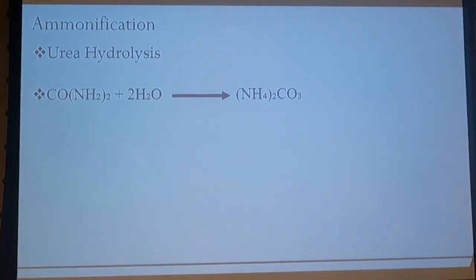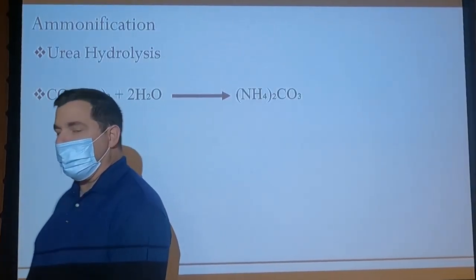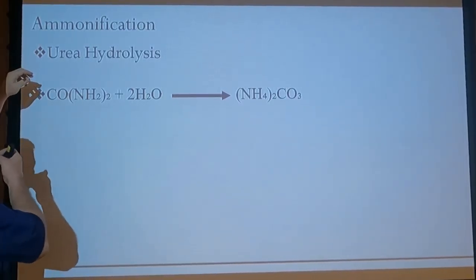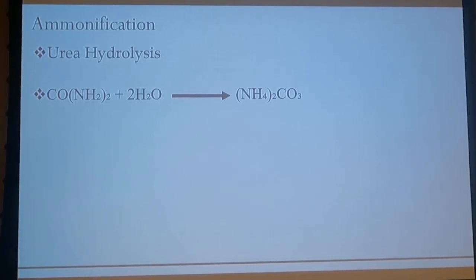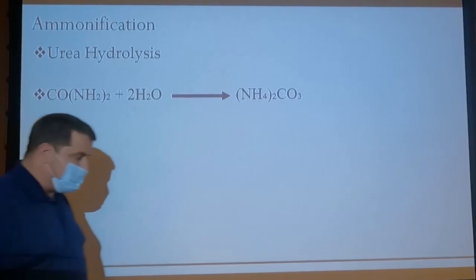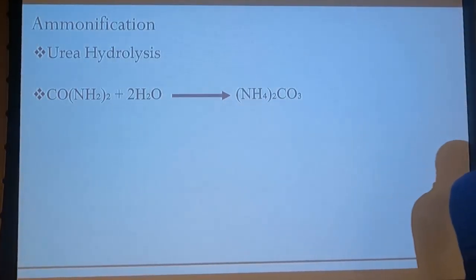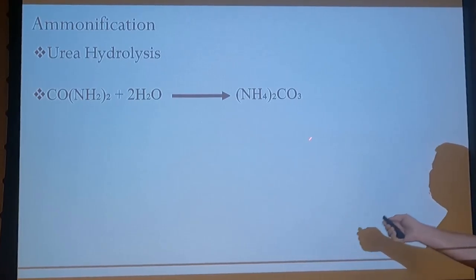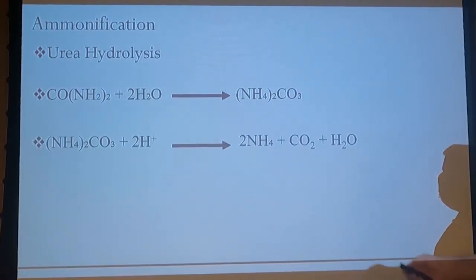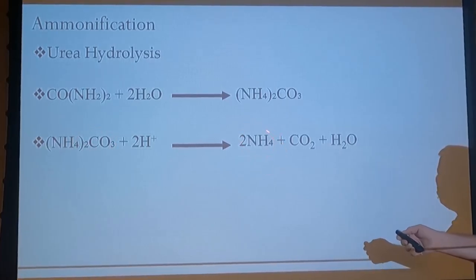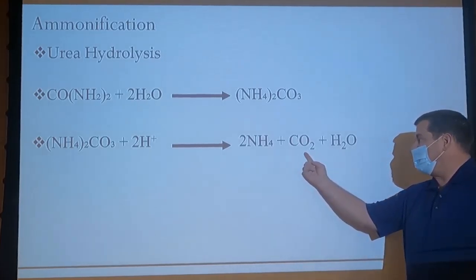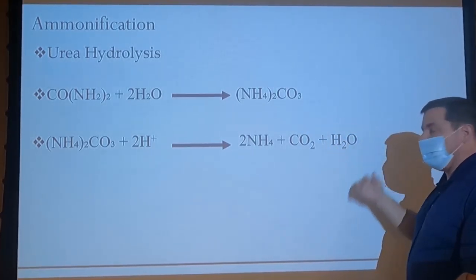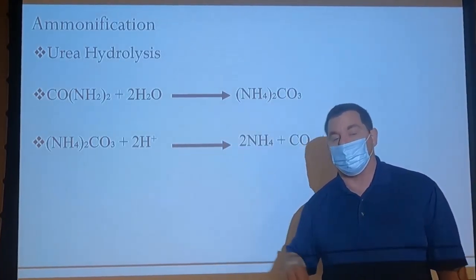One other instance of ammonification more applicable to humans is urea hydrolysis. We have our urea molecule applied as granular fertilizer, and we require water to convert this urea molecule to ammonium carbonate. From ammonium carbonate, it will be converted to two ammoniums, and the byproducts are carbon dioxide and water. The carbon dioxide is likely to be given off as a gas.